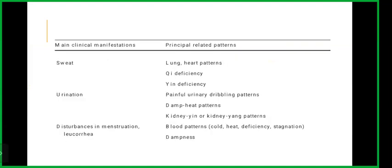When there is sweating, that is a lung or heart pattern, qi deficiency or yin deficiency. For urination, painful urinary dribbling patterns, damp heat patterns, or kidney yin and kidney yang patterns may be involved.